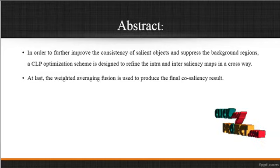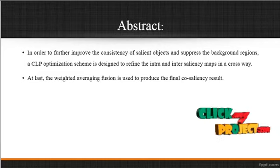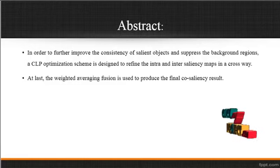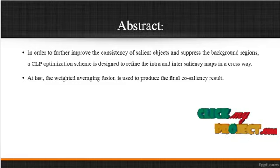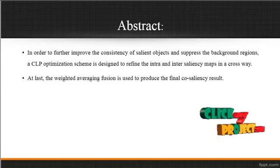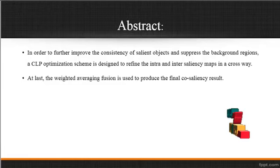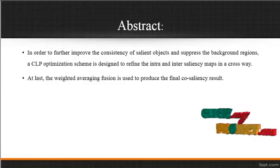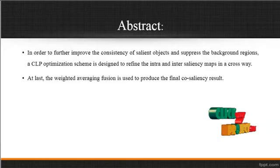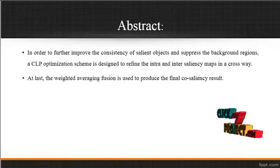In order to further improve the consistency of saliency objects and suppress the background regions, a CRT optimization scheme is designed to refine the intra- and inter-saliency map in the cross-way. At last, the weighted averaging fusion is used to produce the final co-saliency result.